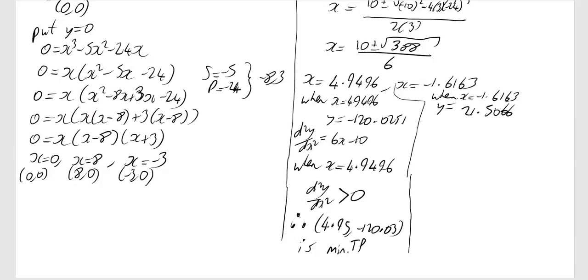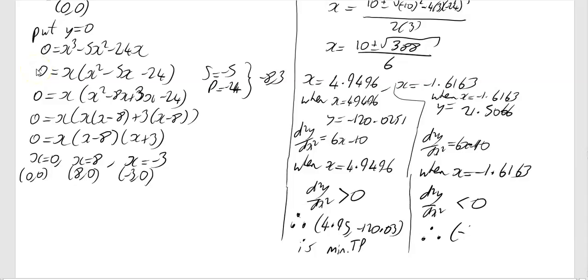Over here, same idea for this one. I'm just going to write my d²y/dx² again, it was 6x minus 10. When x equals minus 1.6163, your d²y/dx², 6 times a negative will give you a negative, and then minus another 10 is definitely going to give you a negative. So it's going to be less than 0, which tells you that your point, giving your coordinate to two decimal places, which is (-1.62, 21.51), is a maximum turning point, and that's it.